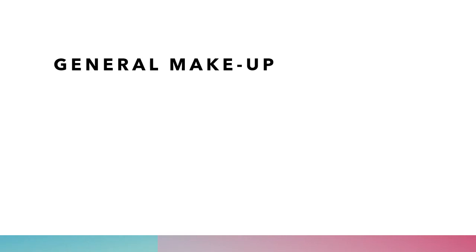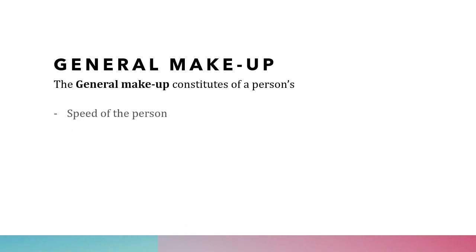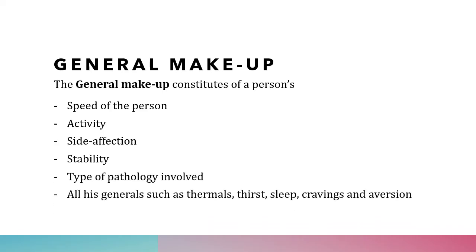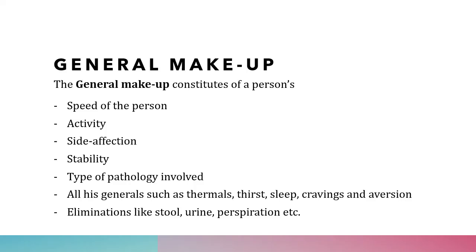General makeup consists of a person's speed, activity, side affections, stability, type of pathology involved, and all generals such as thermal, thirst, sleep, cravings, aversions, and eliminations like stool, urine, perspiration, etc. are to be considered.